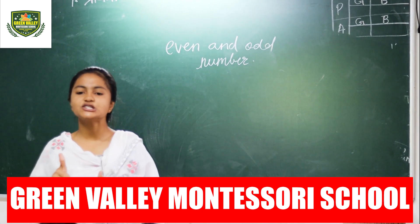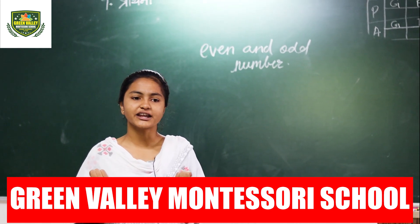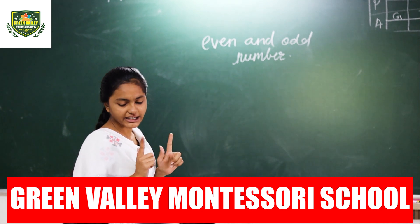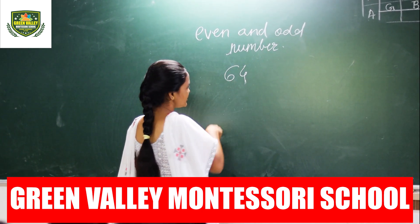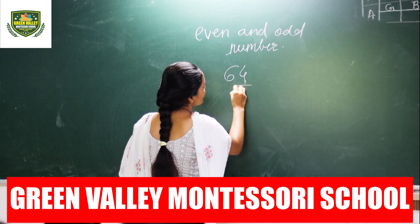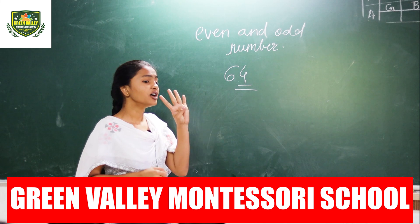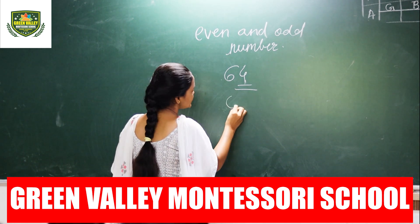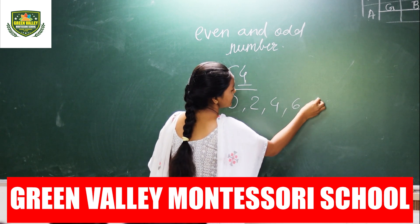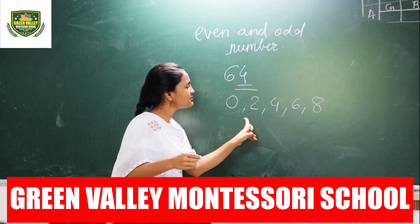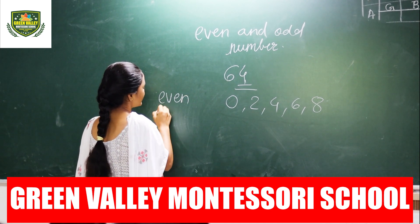It is very easy to identify even and odd numbers. If any number is there, like 64, here on the one's place there is 4. If on the one's place 0, 2, 4, 6, or 8 is there, then it is called an even number.